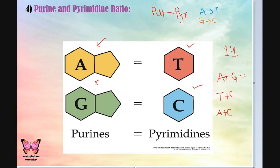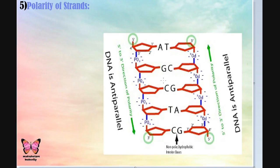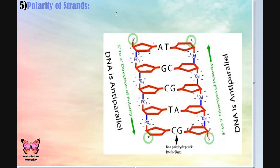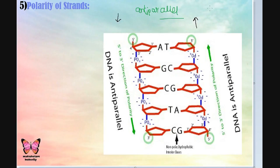The ratio A+G upon T+C equals 1. This is also known as Chargaff's rule. Regarding polarity of the strands: both strands are anti-parallel, meaning one strand goes in the 5' to 3' direction while the second strand goes in the 3' to 5' direction — so they are anti-parallel. This is the polarity of DNA strands. The coiling of these anti-parallel strands occurs in a right-hand direction.